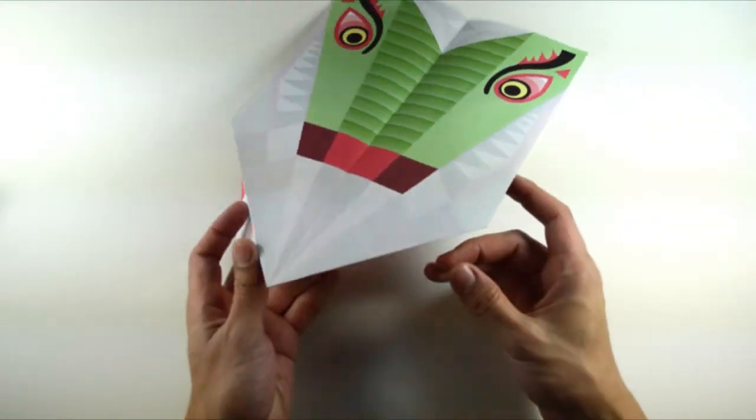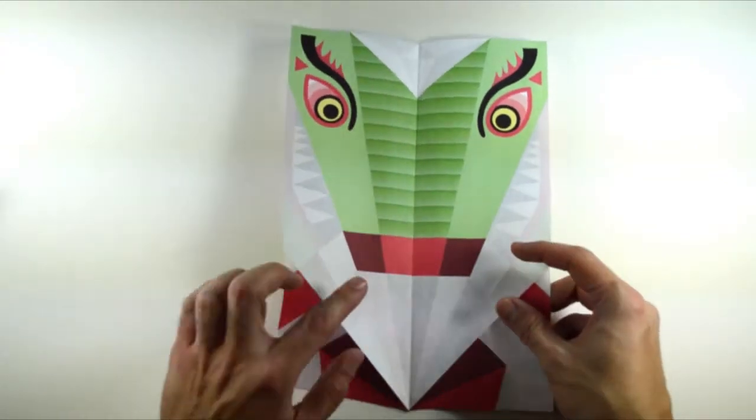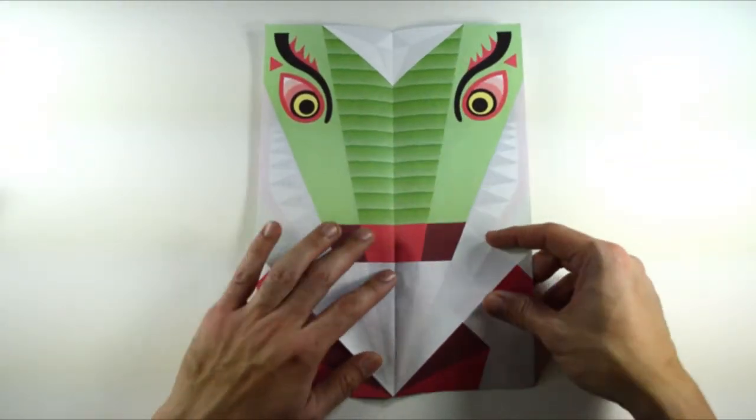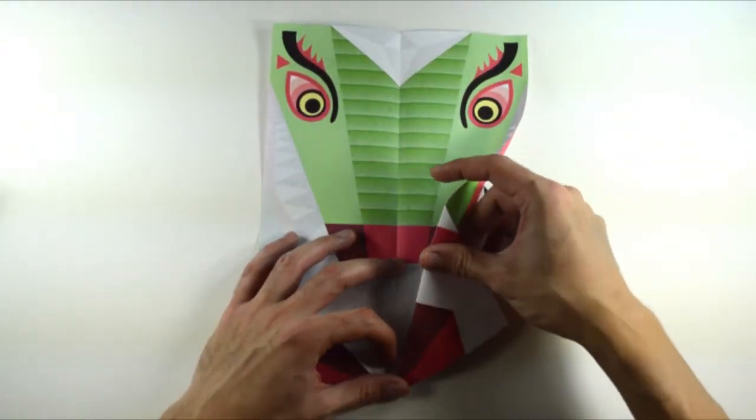Turn the paper over and unfold. Now with the front side facing up, fold the creases you just made to the center line.